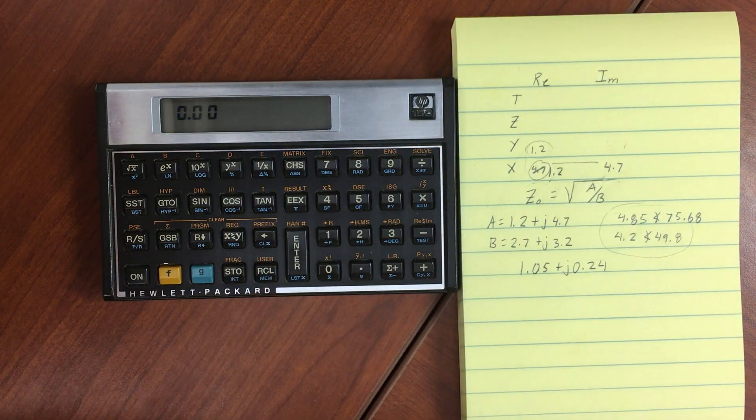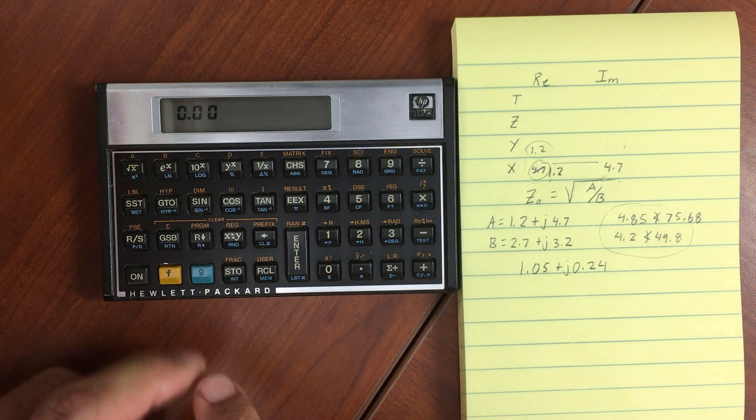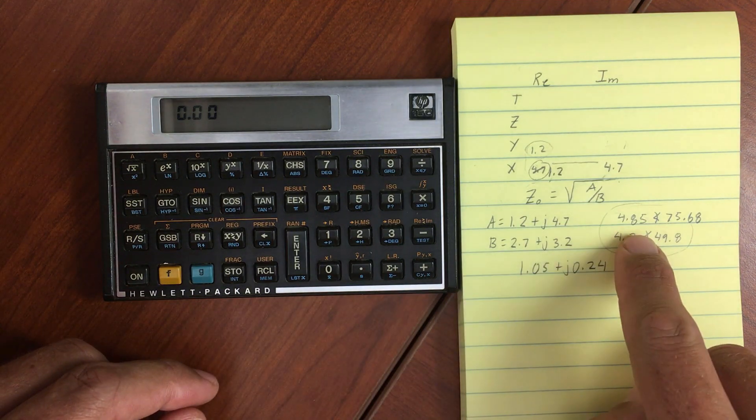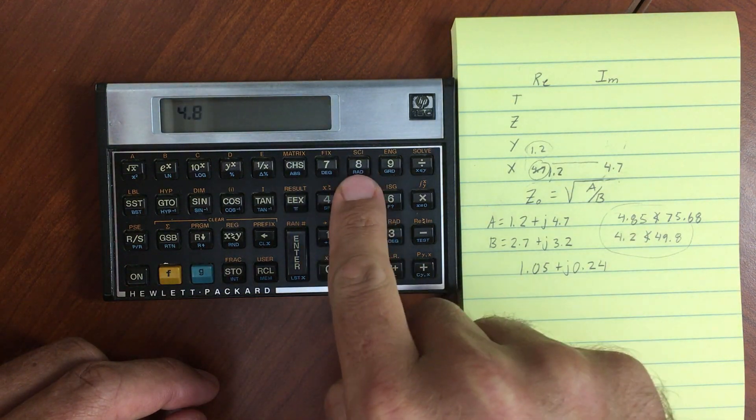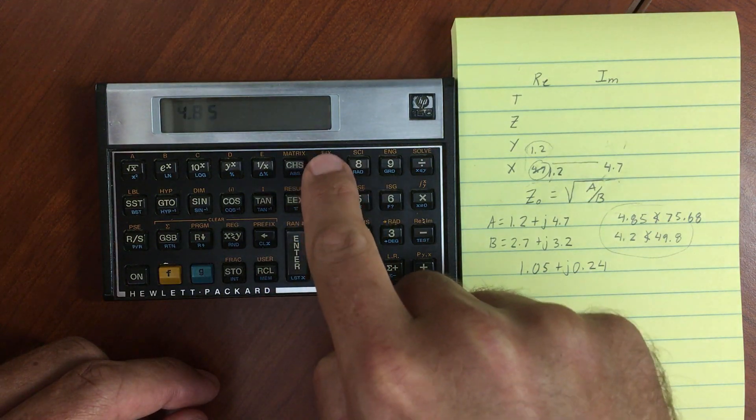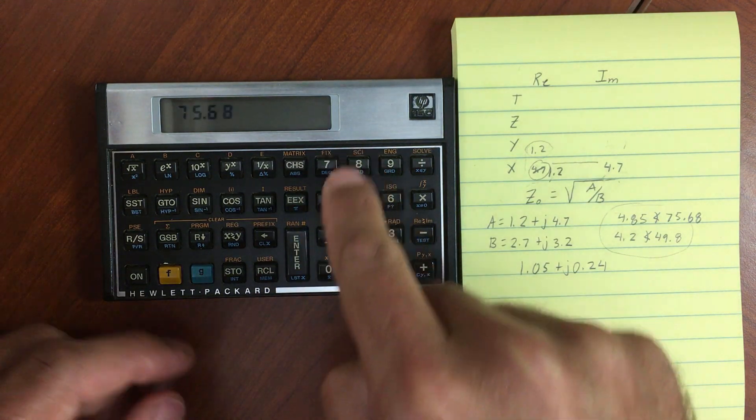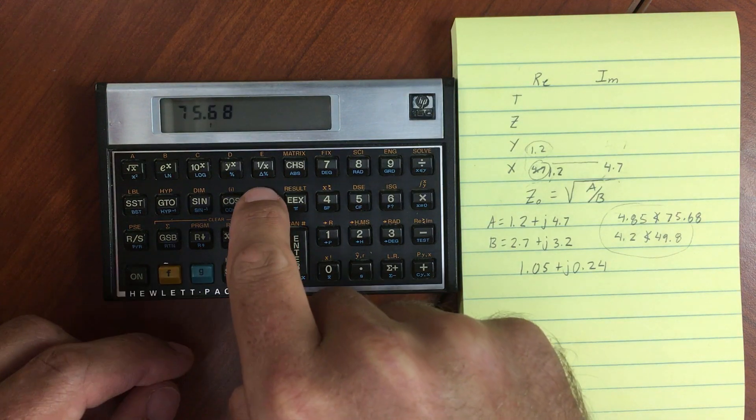So I've gone ahead and cleared our complex mode. And we'll enter in these numbers. 4.85, 75.68. And let's change that into a complex number.